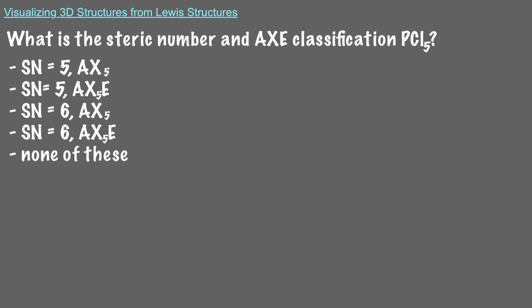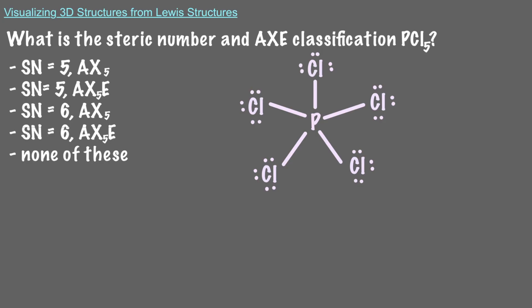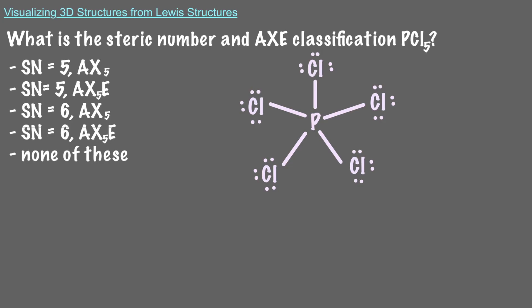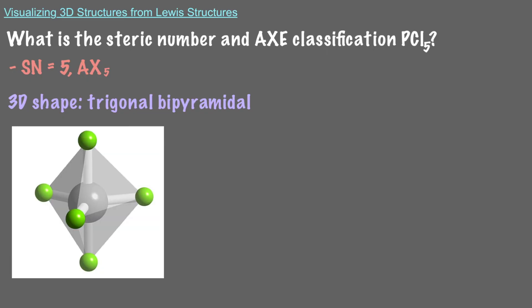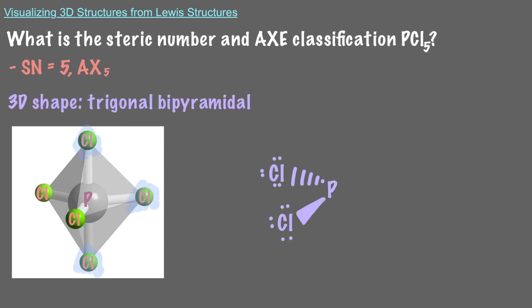What is the steric number and AX classification for PCl5? Since we have 5 atoms attached to the central atom and no lone pairs, our steric number is 5, and the molecule classifies as AX5. That means our 3D shape is trigonal bipyramidal. It has this name because it resembles two triangular pyramids glued together. We place our central atom in the center and each of our terminal atoms on a vertex. Since one atom is going into the screen, we put it on a dash. The one coming out of the screen goes on a wedge. The other 3 atoms are on the plane of the screen, so we just use a straight line.